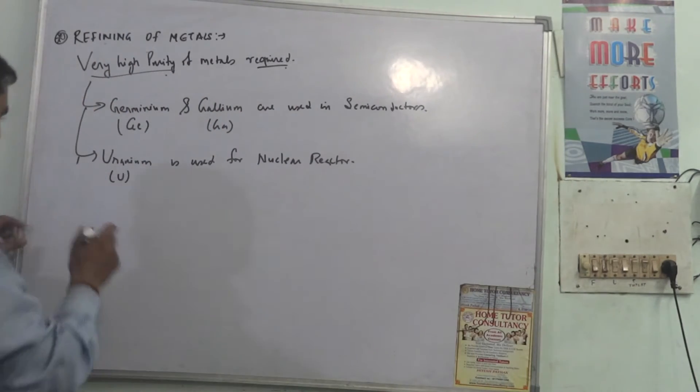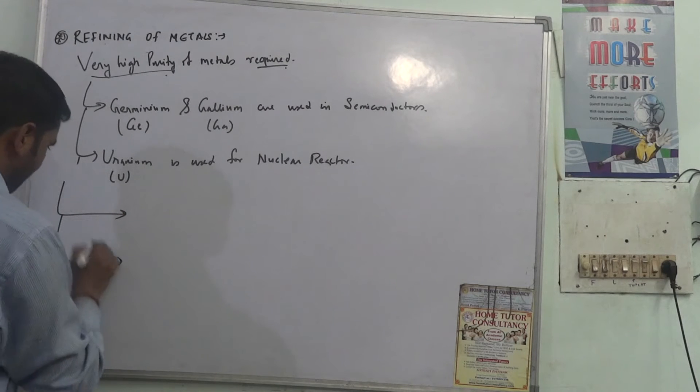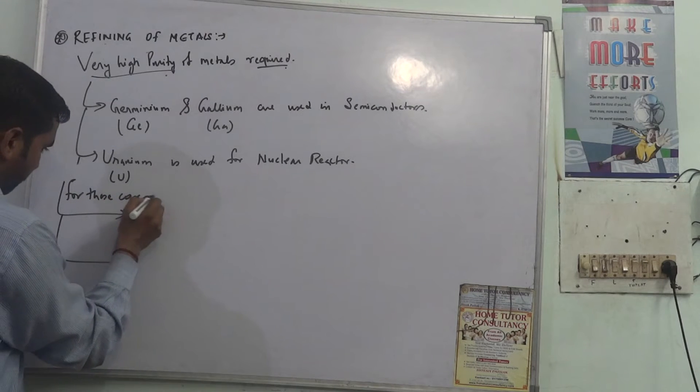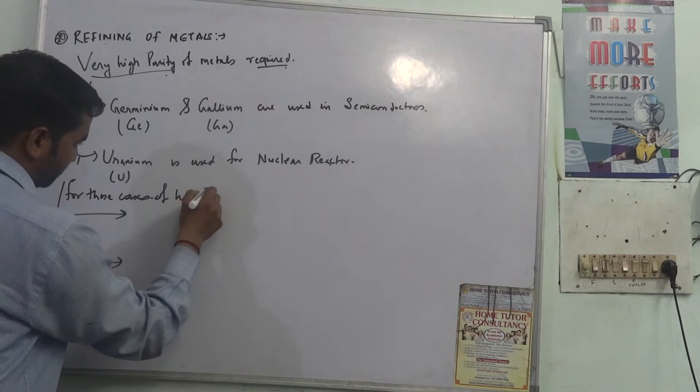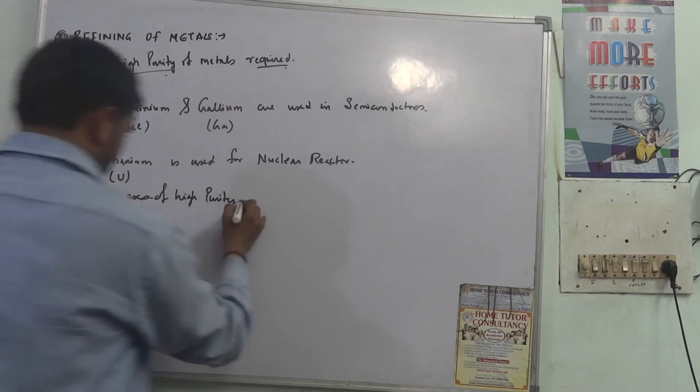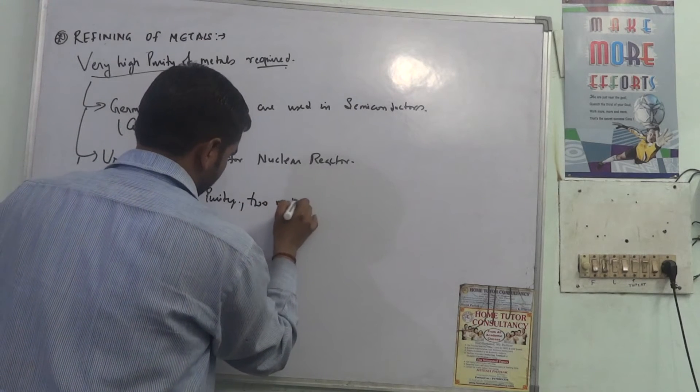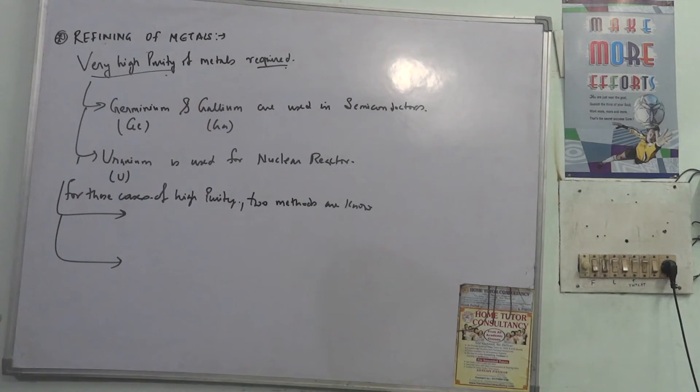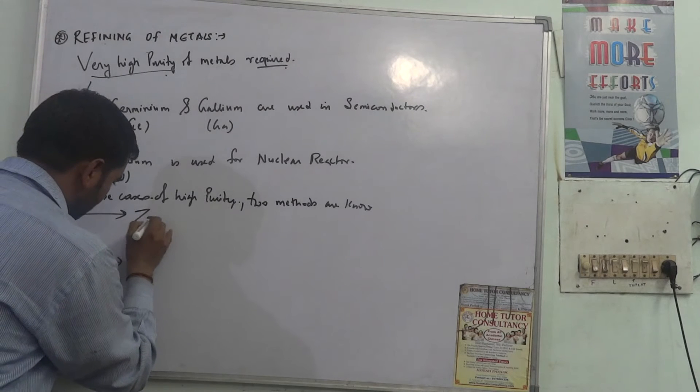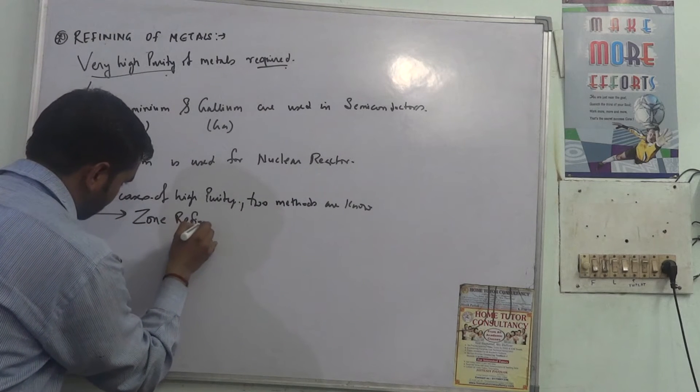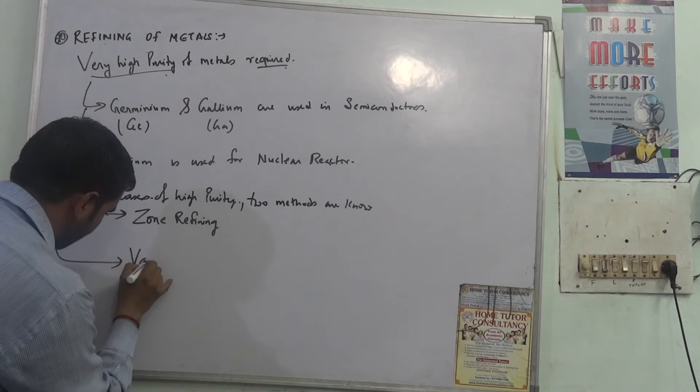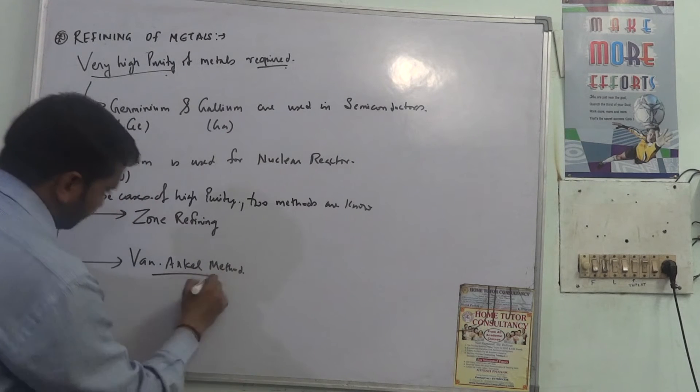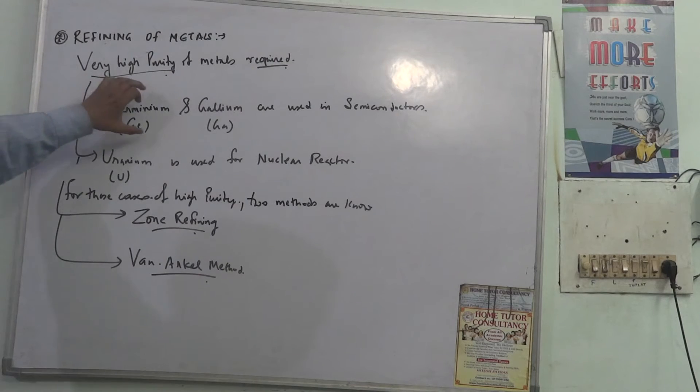This type of materials we cannot use electro refining for. In our syllabus there are two methods for these cases of high purity. The first one is called zone refining and another is called Van Arkel method.